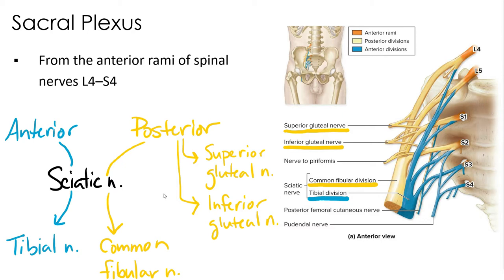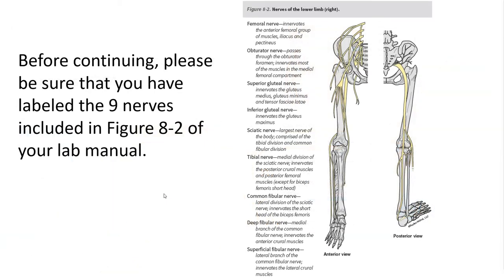Let's review these branching patterns and locations on our flatman nervous system model first. Before continuing, make sure you've already labeled the nine nerves you are responsible for in figure 8-2 of your lab manual. Once you have those completed, go ahead and continue on with this video as we go through these models.